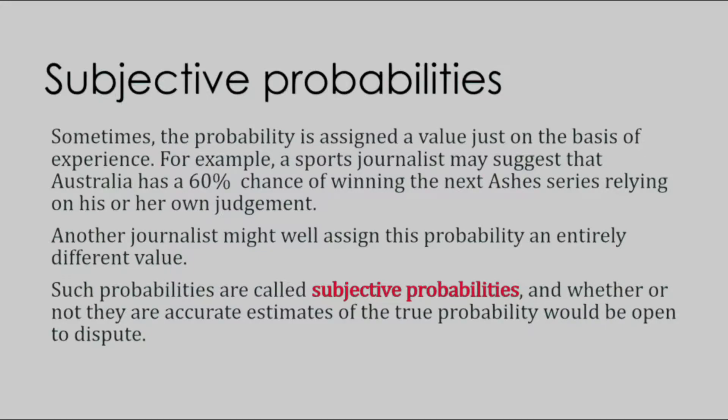Subjective probability: Sometimes the probability is assigned a value just on the basis of experience. For example, a sports journalist may suggest that Australia has a 60% chance of winning the next Ashes series, relying on his or her judgment. Another journalist might assign the probability an entirely different value. Such probabilities are called subjective probabilities, and whether or not they are accurate estimates of the true probability would be open to dispute.